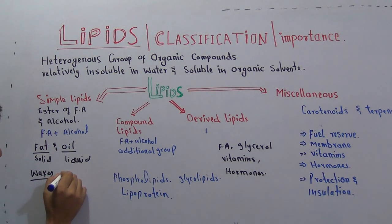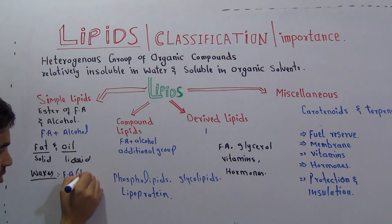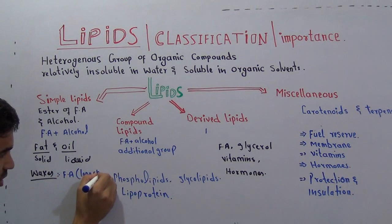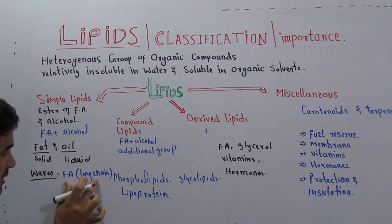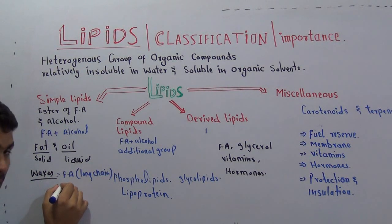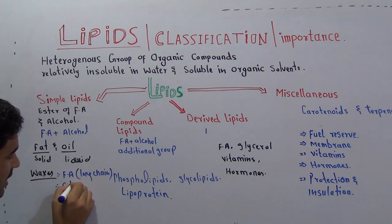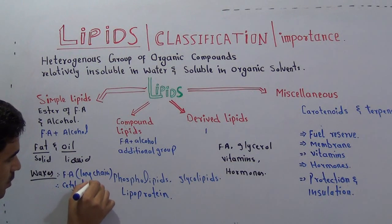Inside the waxes you will find a fatty acid — specifically a long chain fatty acid — and there will be a special alcohol called cetyl alcohol.